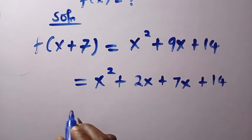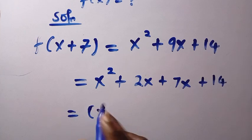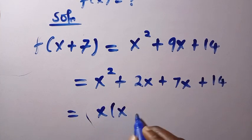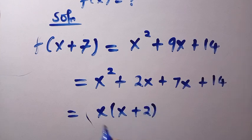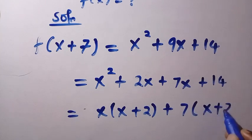And by grouping this, we are going to have x into bracket of x plus 2. I group and I factorize out x. Plus also we have 7 into bracket of x plus 2.